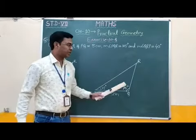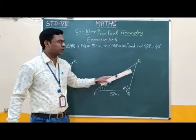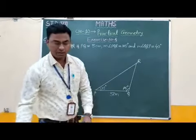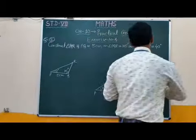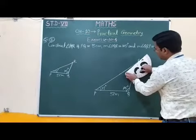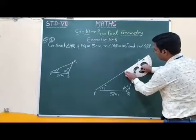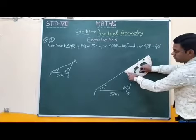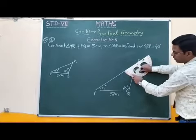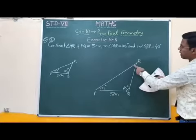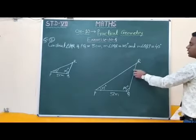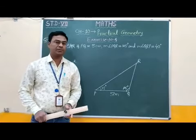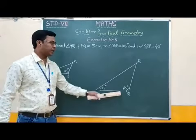Now students, let us check whether our construction is correct or not. Angle R should be 40 degrees. Therefore, we measure this angle with the help of the protractor, using the inner scale: 10, 20, 30, 40. Therefore, this angle R is 40 degrees. Therefore, our construction is correct. In this way, we can construct triangle PQR.